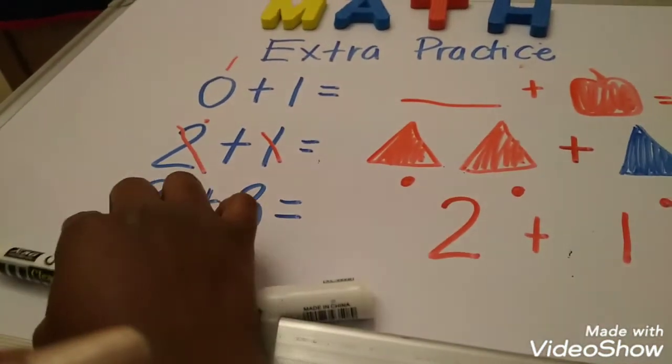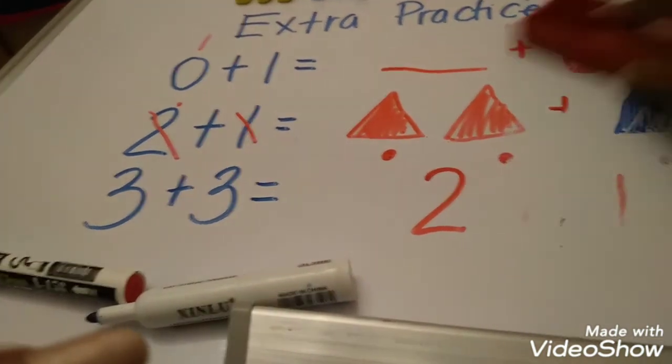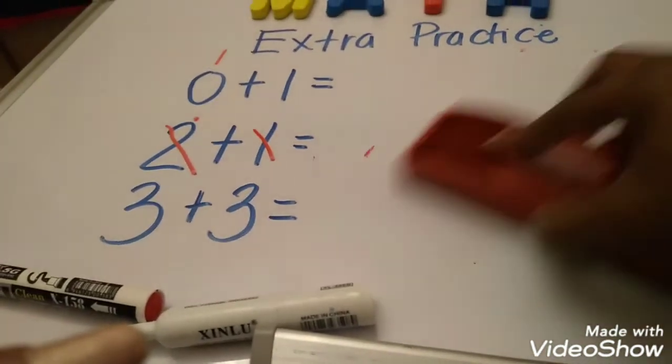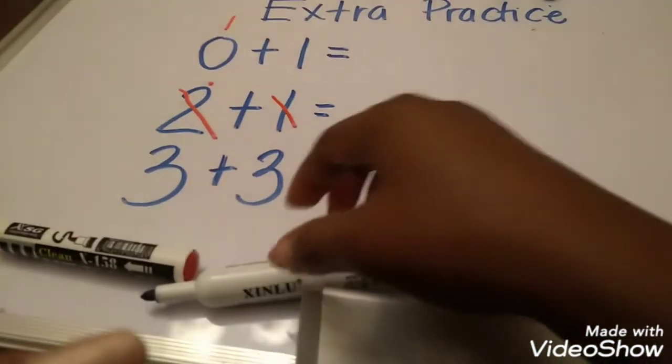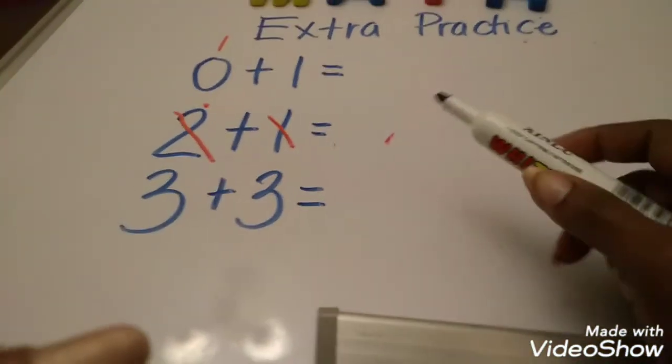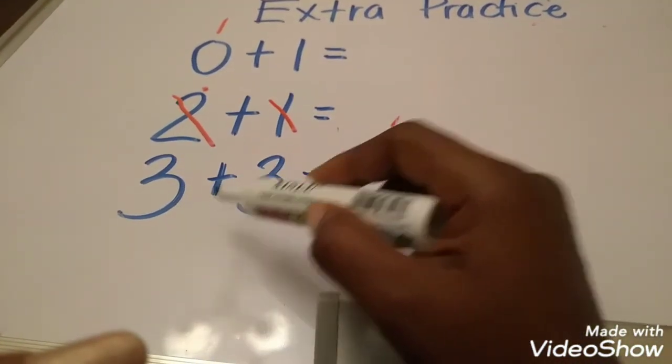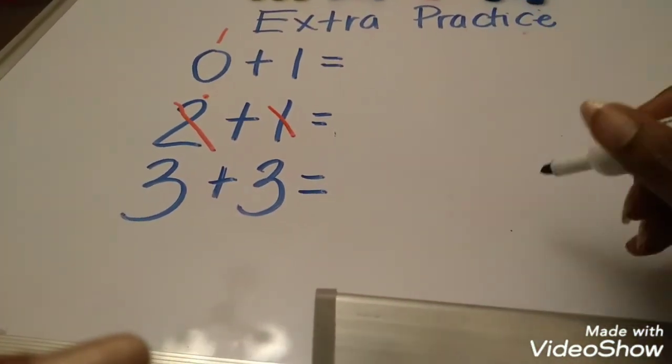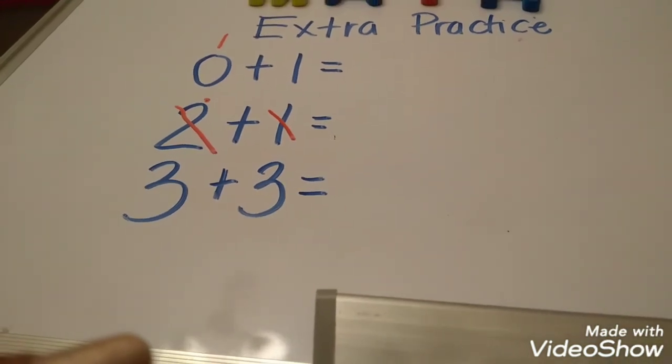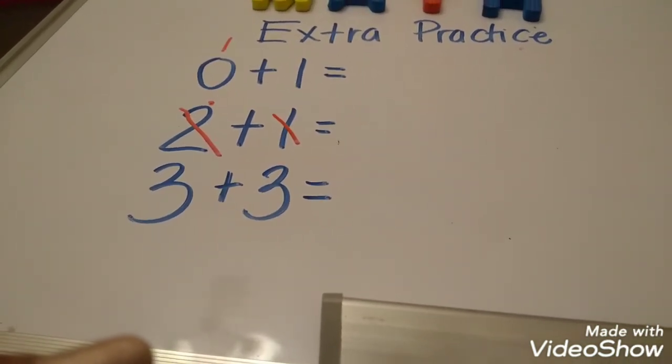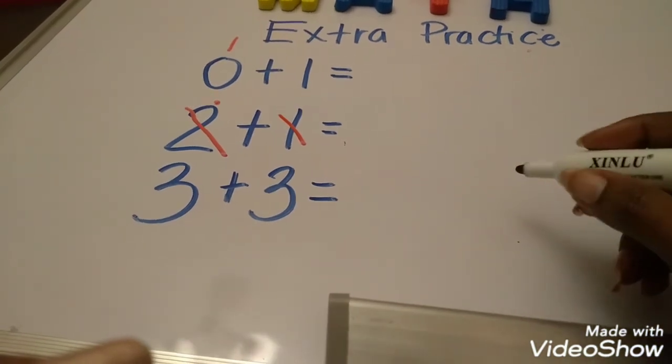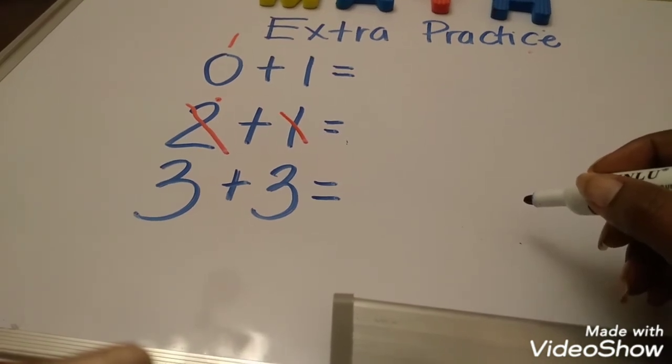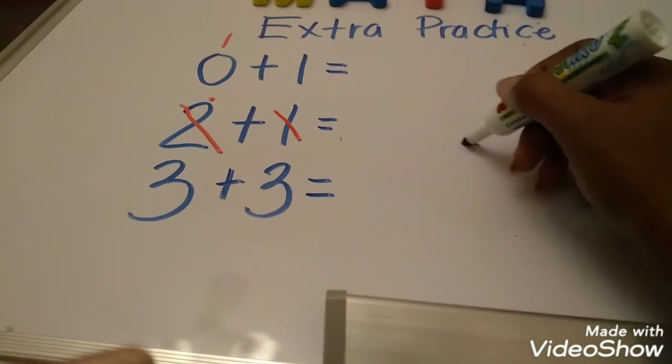Now, let's erase this and do the last problem. All right. The last problem is. What's the last problem? Three. Plus. Three. Equals. Now, let's say. That Salma. Oh, not Salma. Let's say. Hmm. Nadine. Gave me. Three. Balls. She gave me three. Balls. So, let's draw our balls. One. She gave me three balls to play with. Two.